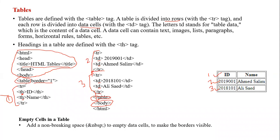You only need to remember three tags: TR, TH, and TD. TR means each row starts with TR and closes with TR. When you put the table heading part you write TH. When you enter information you write TD. Only these three - TR, TH, TD. The table heading TH is for ID and Name, and under the heading you have student data using TD.